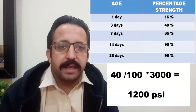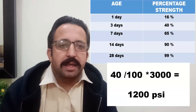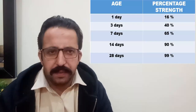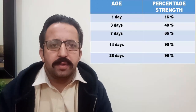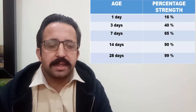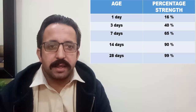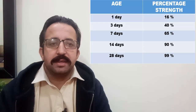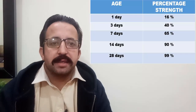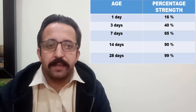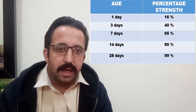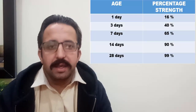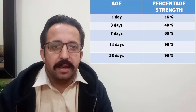After seven days, concrete gains 65 percent of its total strength. After 14 days it gains up to 90 percent of its total strength. After 28 days, as already discussed, it gains almost 99 percent of its total strength, and this 28-day strength is considered for different design processes.